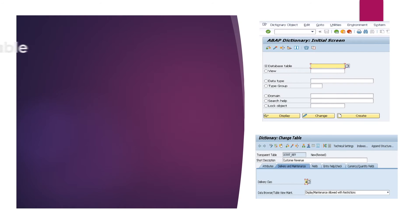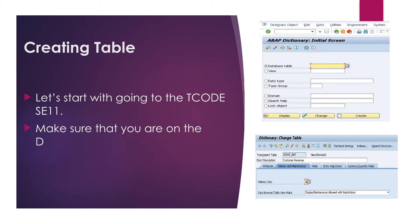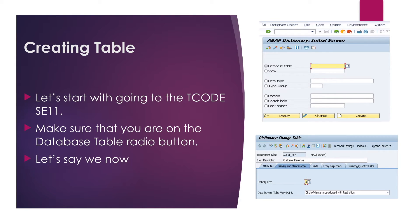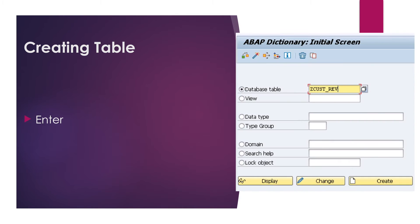Now we are going to learn how to create SAP tables. First, we have to enter the T-code SE11. After that, make sure you have clicked the database table option available in the list. Let's create a table called Customer Revenue with the technical name zCust_rev. Enter the name and click on the create button.